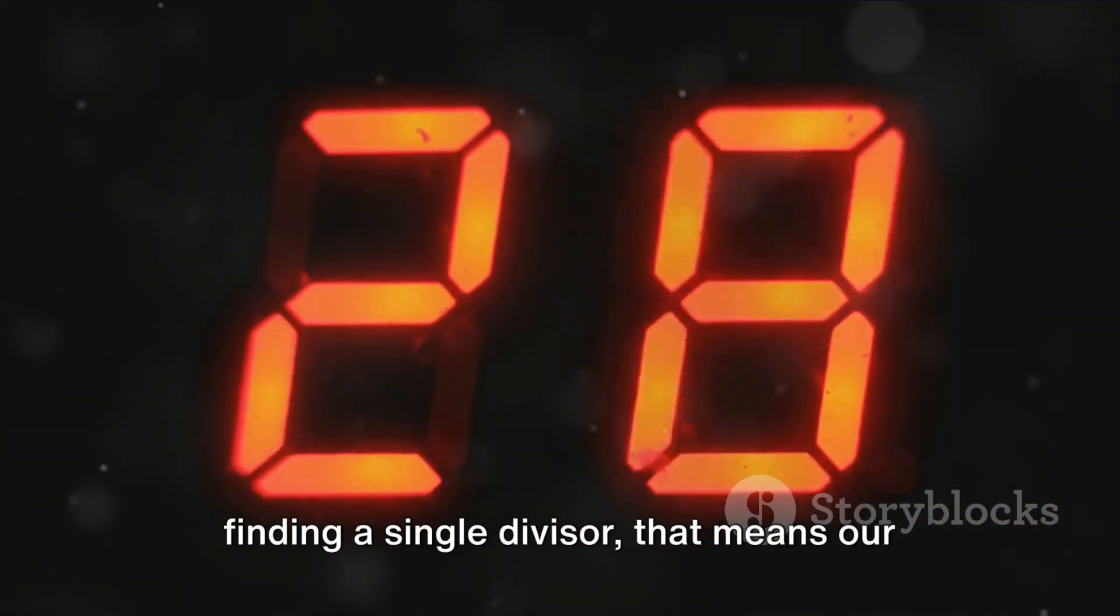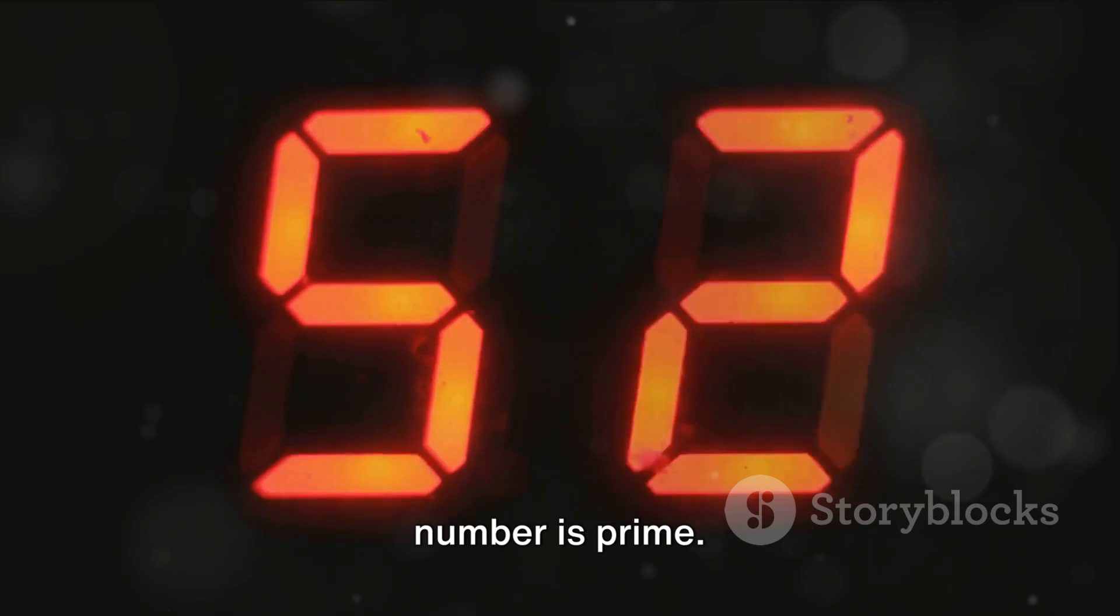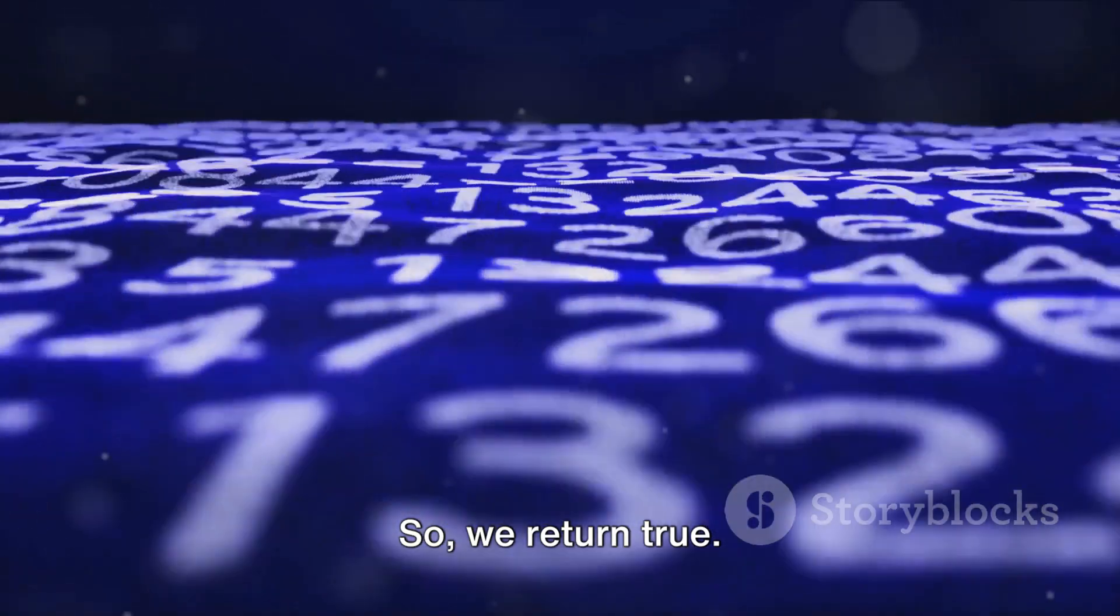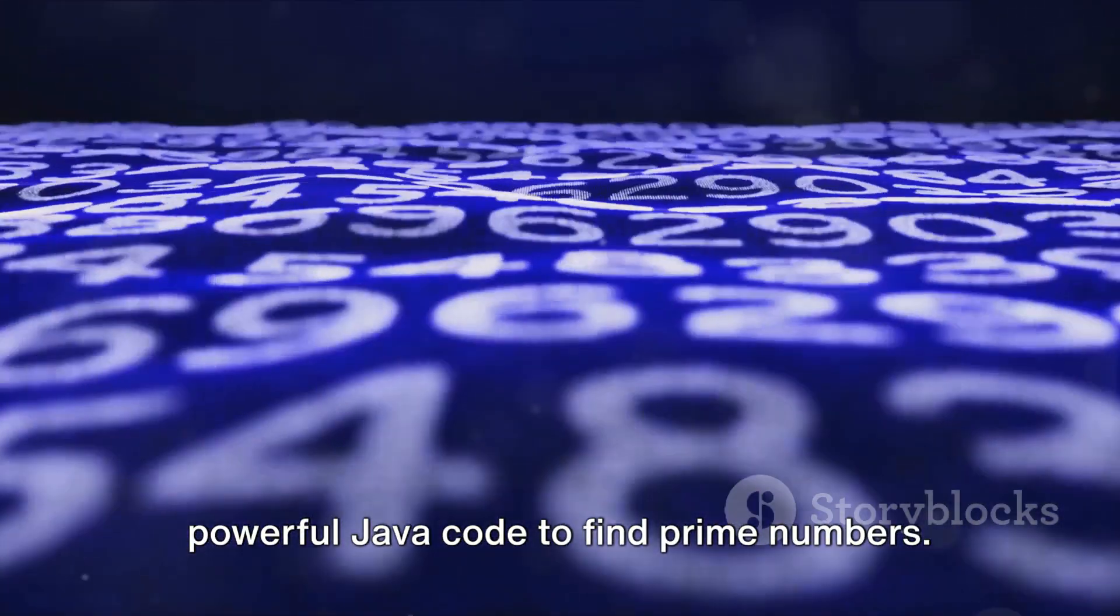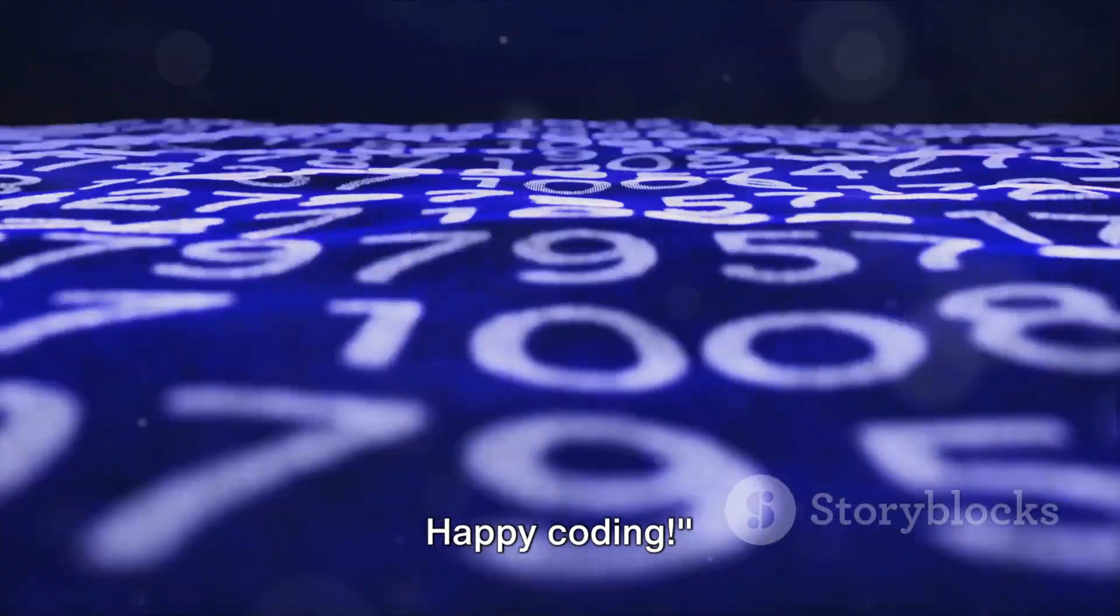Now, if our loop completes without finding a single divisor, that means our number is prime. So we return true. And there you have it. A simple yet powerful Java code to find prime numbers. Happy coding!